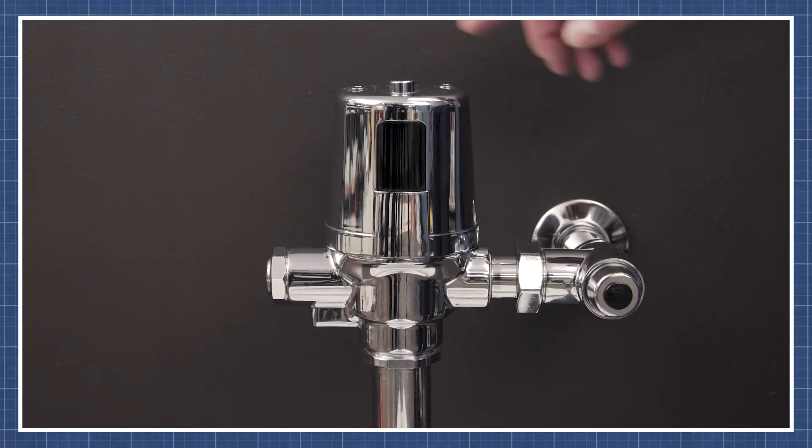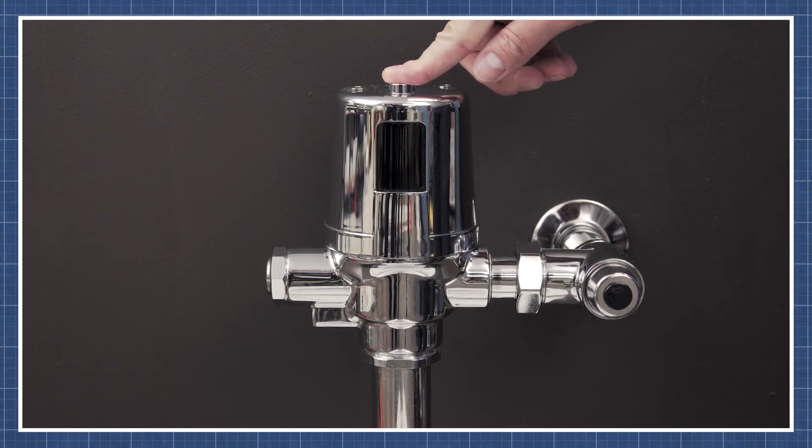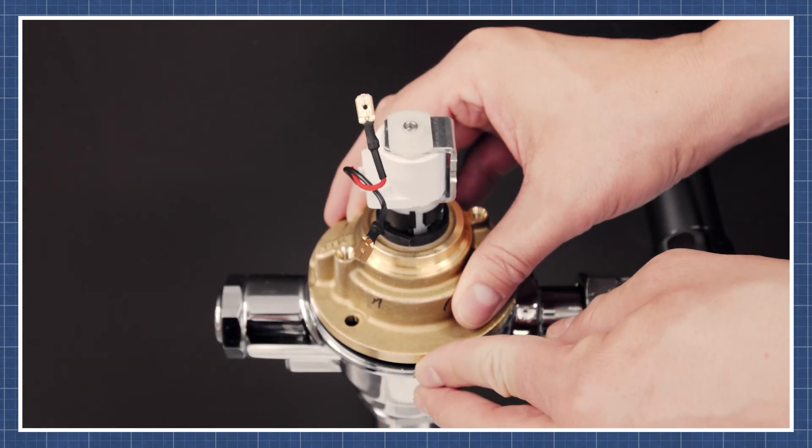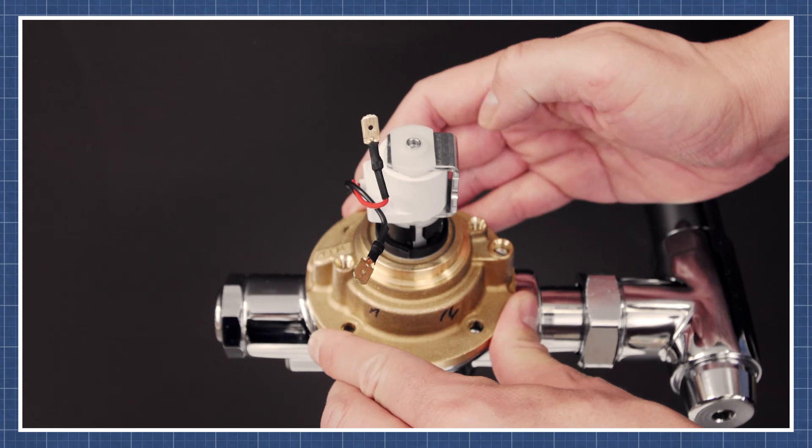When the unit has power and the lights are showing, but the valve doesn't flush, check to see if the solenoid makes a clicking sound. If there is no sound, then replace the cast cap solenoid assembly. You can watch this in the video linked below.